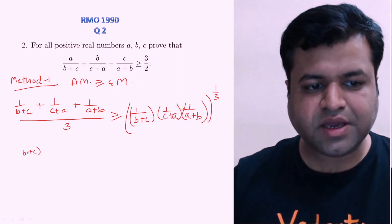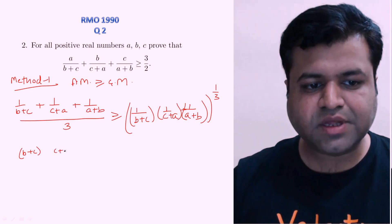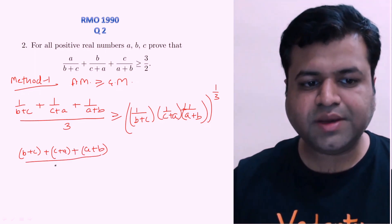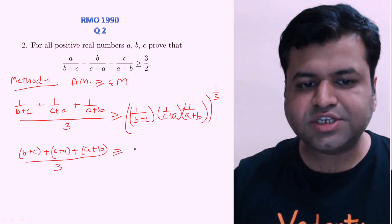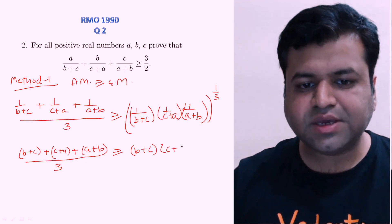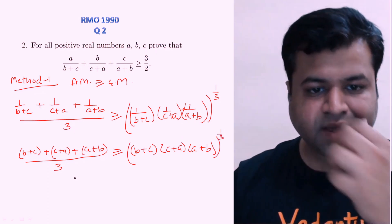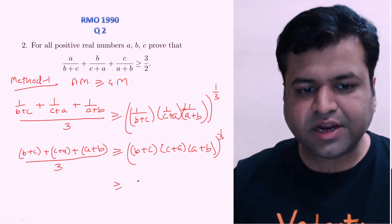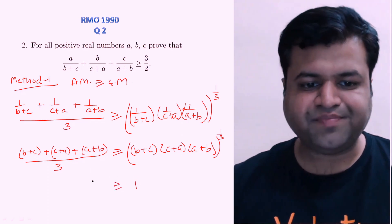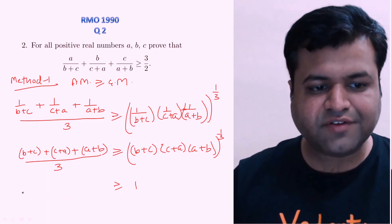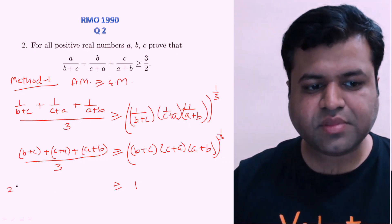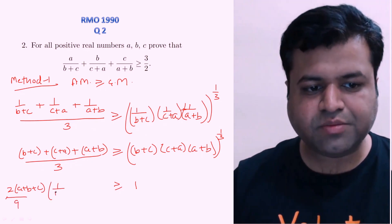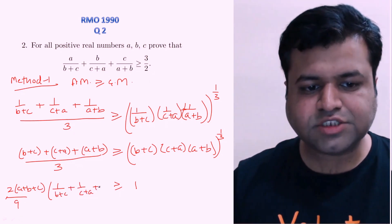Now if we apply AM-GM again on the three numbers B+C, C+A, and A+B, the AM will be their sum divided by 3, which is greater than or equal to their geometric mean: [(B+C)(C+A)(A+B)]^(1/3). Now if you multiply these two inequalities together, on the right-hand side the GM terms cancel out, leaving 1. On the left-hand side we get [2(A+B+C)/3] multiplied by [1/(B+C) + 1/(C+A) + 1/(A+B)] divided by 3, which gives us 2(A+B+C)/9 × [1/(B+C) + 1/(C+A) + 1/(A+B)] ≥ 1.